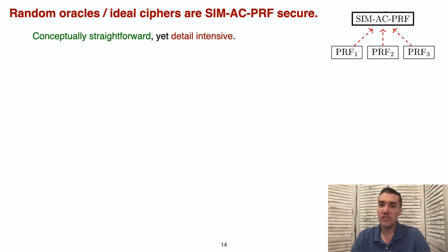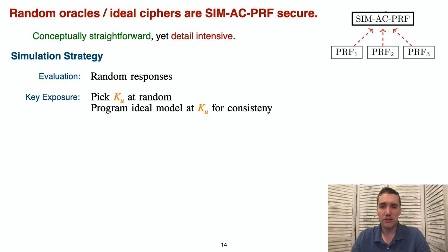I'll finish out this talk by discussing how we showed that various PRFs and encryption schemes meet our desired notions of security. We start at the lowest level showing that random oracles and ideal ciphers achieve our PRF notion. These proofs provide the conceptually straightforward yet detail intensive ideal model programming that's at the core of all of our results. The simulation strategy is fairly straightforward. Evaluation queries are given random responses and then later when we need to expose some user's key, we pick this key at random, and then we program our ideal model to be consistent with the previous evaluation results we returned.